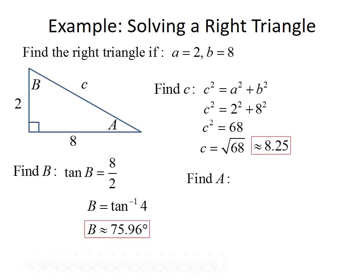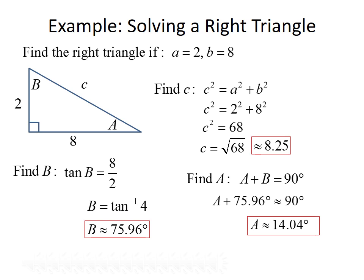Finally, we want to find angle A. We could use trig functions or use the value of C we already found, but the easiest method is to use the fact that the two non-right angles add to 90 degrees. So A plus 75.96 equals 90 degrees, giving us A approximately equal to 14.04 degrees. That completes solving this triangle.